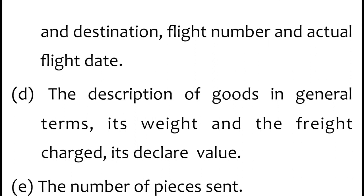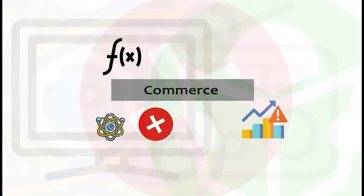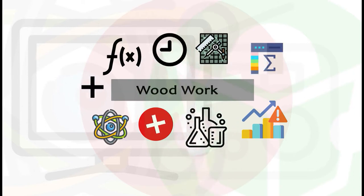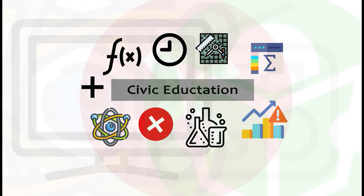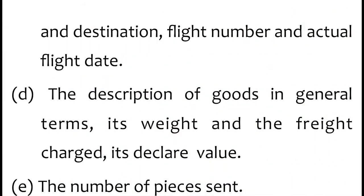There must be the flight number and the actual date of where the goods are going and when they will arrive, and which destination they will be taken to. D: the description of goods in general terms, its weight, and the freight charge — its declared value.